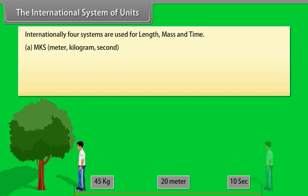CGS system, that is centimeter, gram and second system. FPS system, that is foot, pound, second.